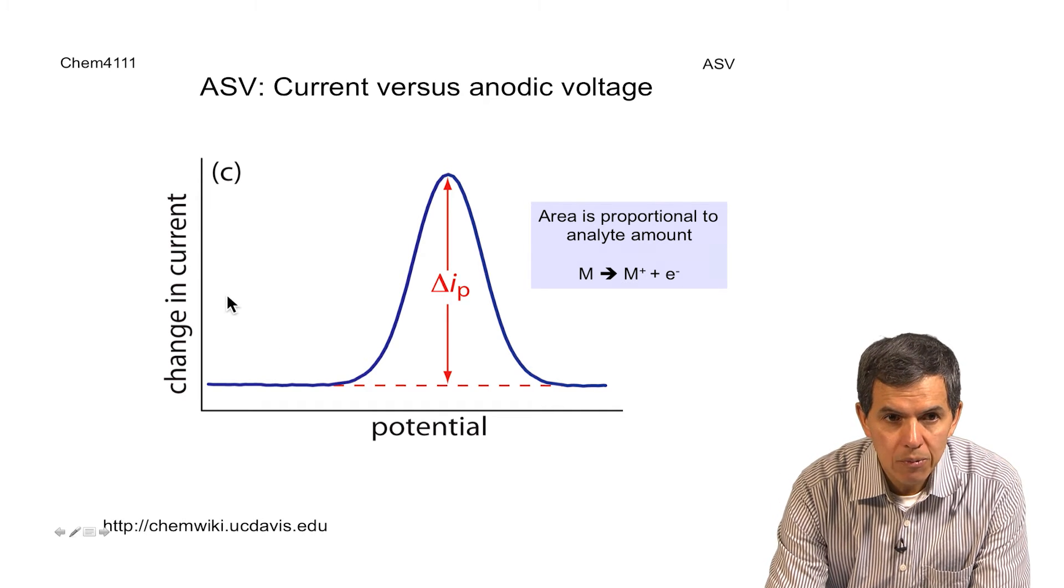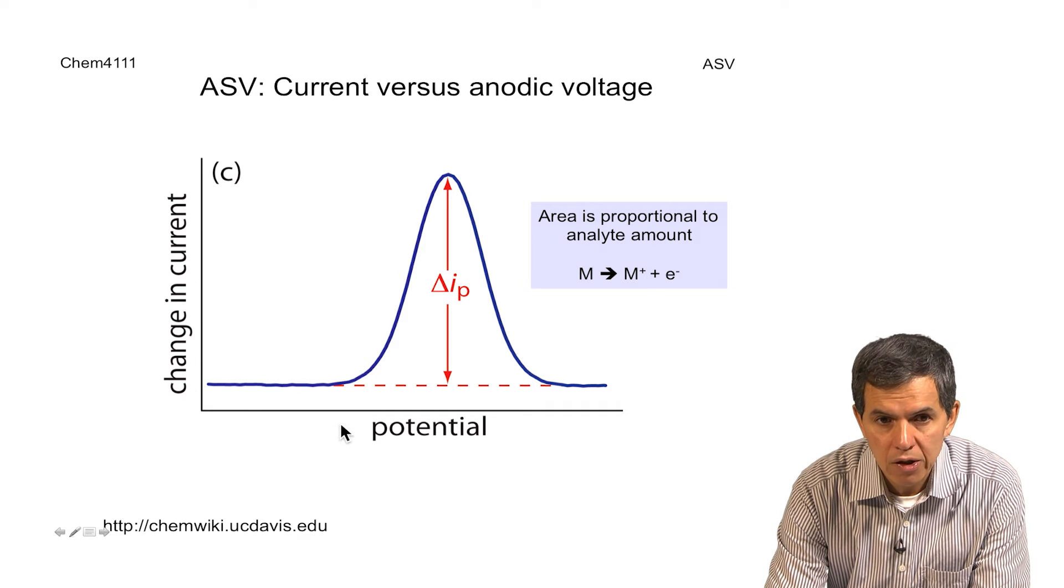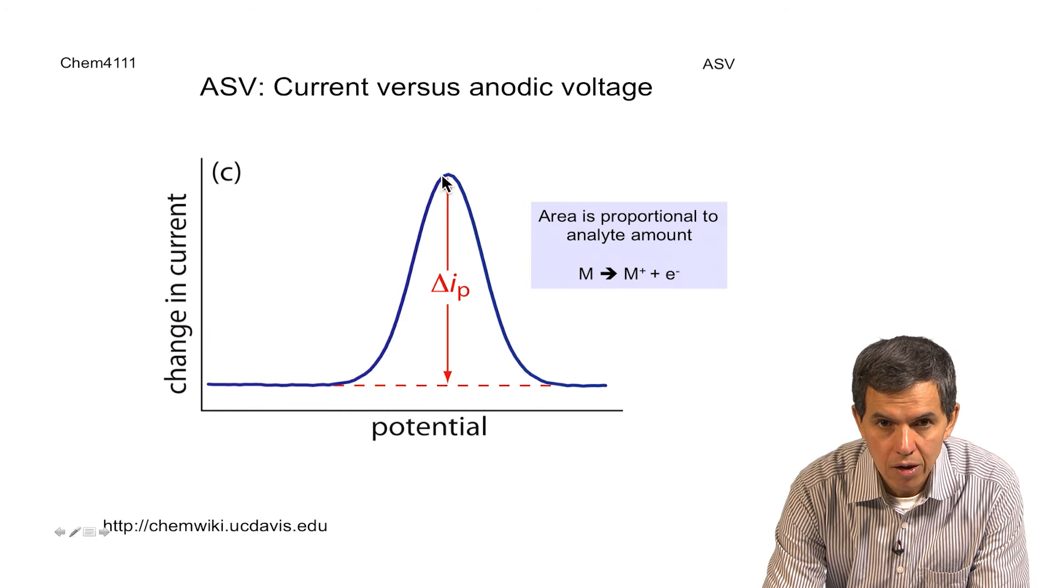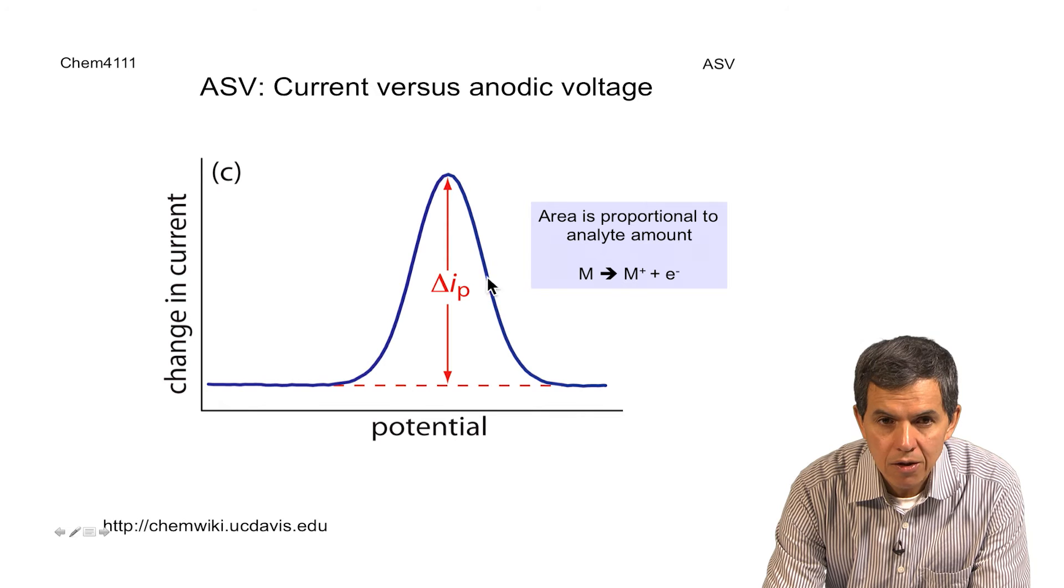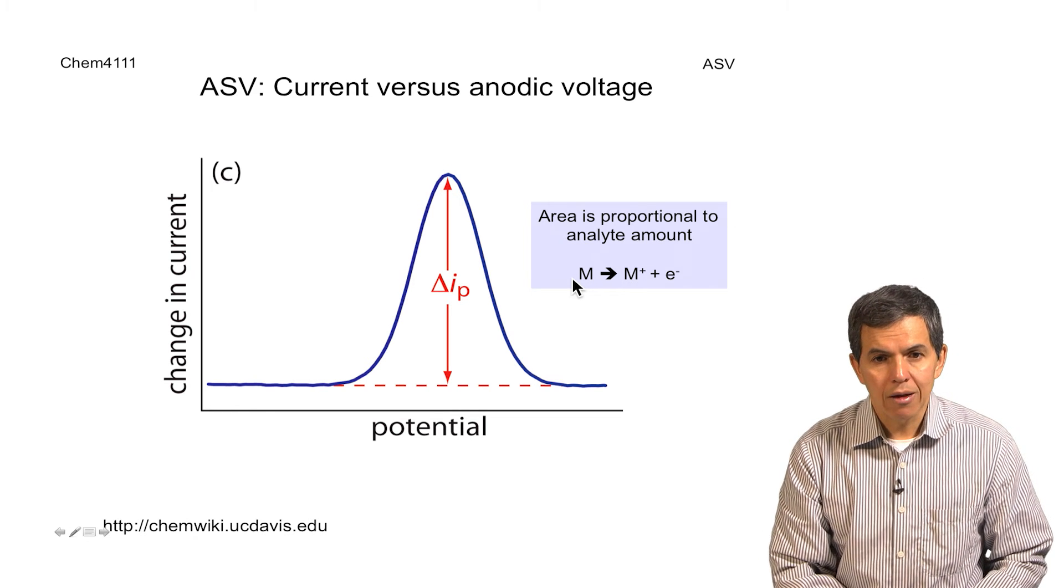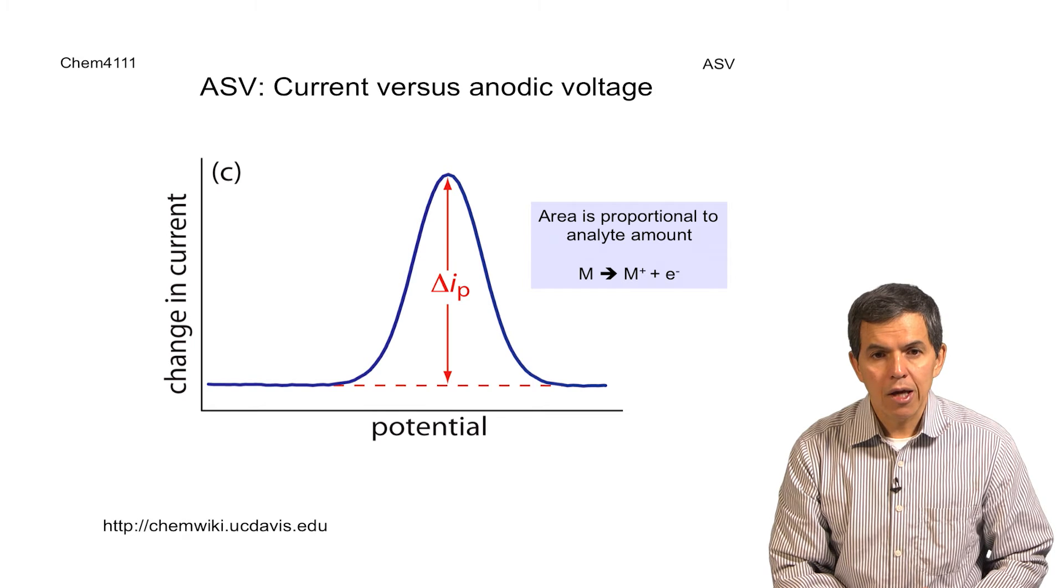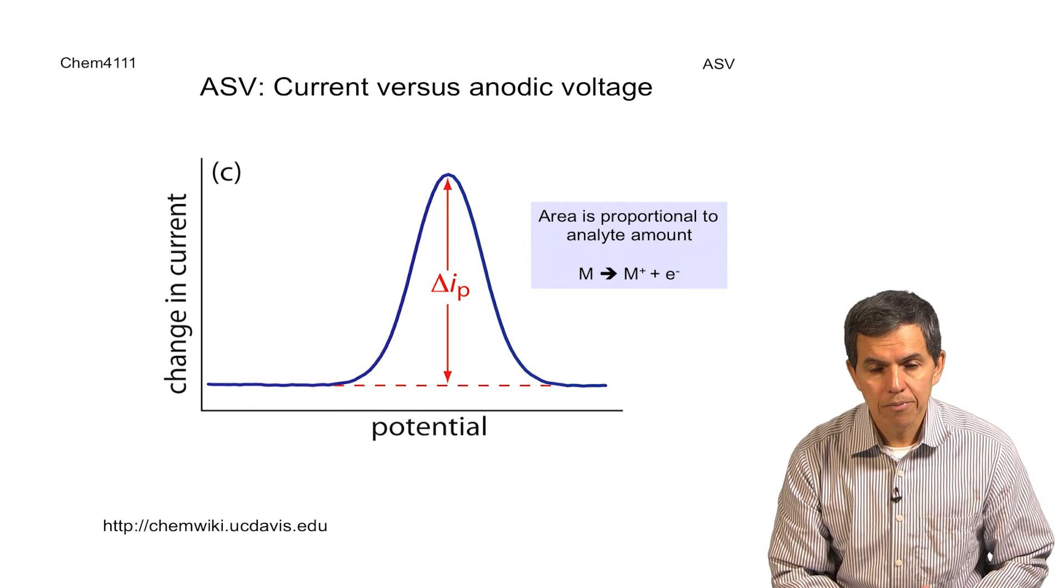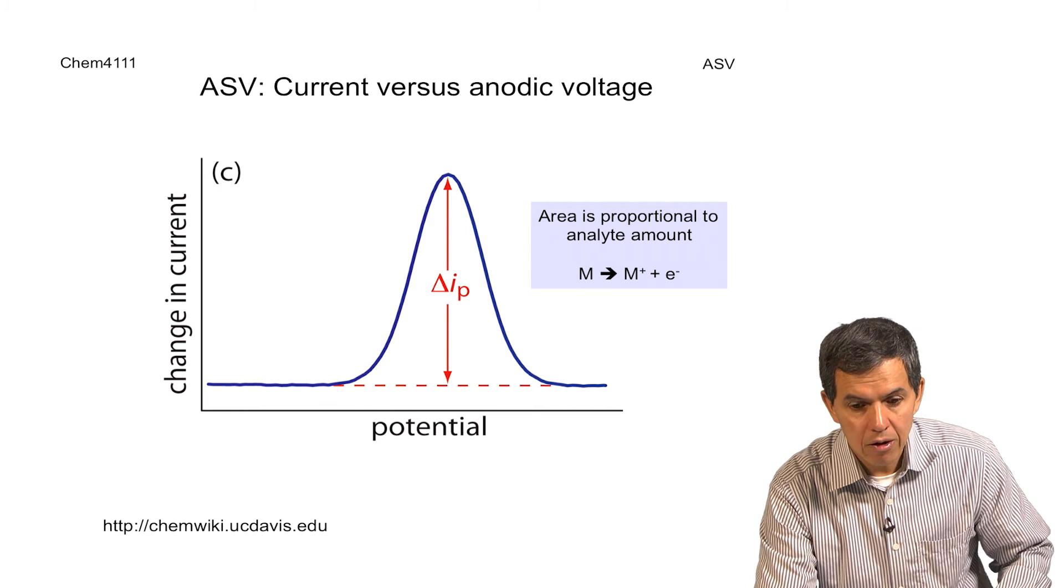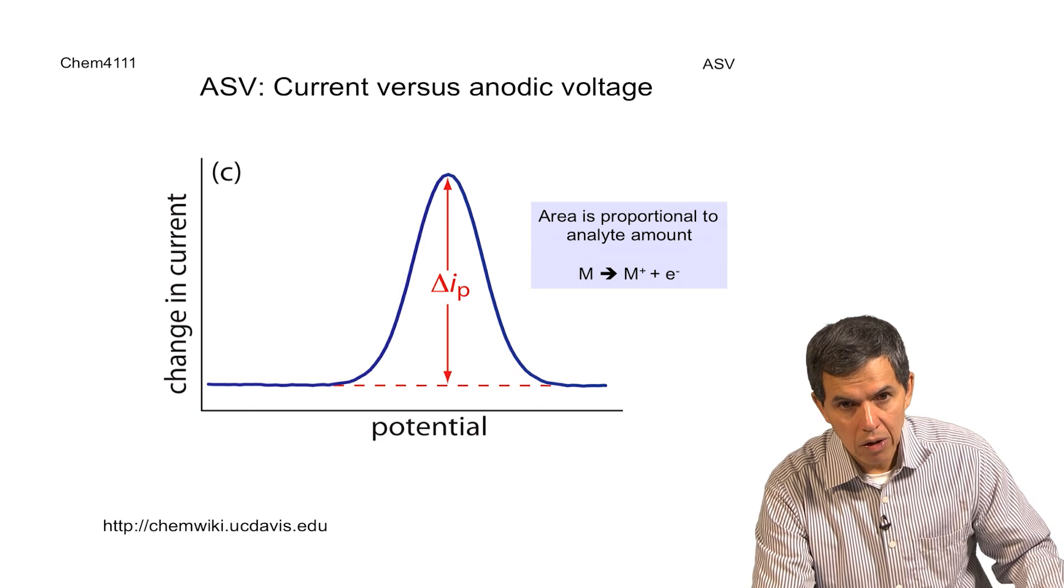Here we have a voltammogram showing the change in current as a function of potential, illustrating that as the potential gets more positive, species will be released from the electrode and that is going to cause a positive current as shown here. The area of this diagram here, on this voltammogram, is proportional to the analyte amount. If a high concentration or high amount of this analyte is pre-concentrated on the electrode, the current that we get here, the area that we'll get here, will be much larger. And this is the principle for quantification of this particular technique that allows to concentrate very low levels of an analyte.